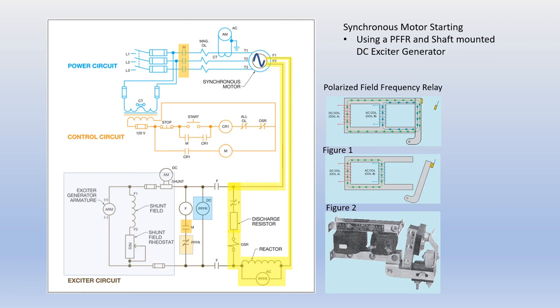The closing of the PFFR contact will now energize the field relay coil F with DC voltage, and normally open contacts F will close while the normally closed contact F will open. The closing of the F contacts will result in DC excitation voltage being applied to the rotor of the motor. The applied DC will cause the rotor electromagnetic field to lock in step with the rotating magnetic field of the stator and run at synchronous speed.